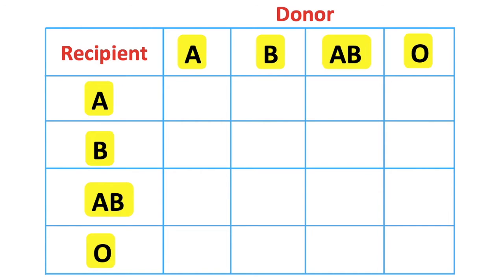A person with type A blood can receive type A blood. They can't receive type B blood because type A blood has anti-B antibodies, and therefore the body will fight against these foreign antigens.